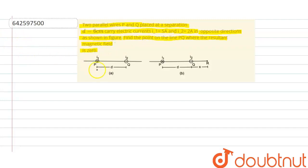So what we are given? We are given two wires P and Q. For Q wire, current is coming out of the plane which is represented by dot. And for P wire, current is going inside the plane which is represented by cross. So we are given two figures.